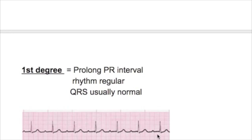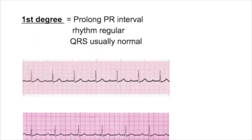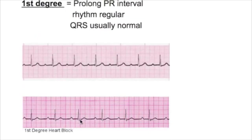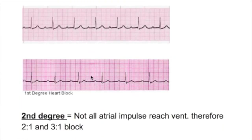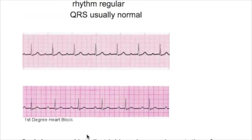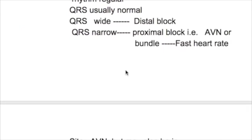The QRS is usually normal in first degree block, and there is no QRS drop. In second degree block, if the QRS is wide, it means it's a distal block; if the QRS is narrow, it's a proximal block — in the AV node or in the bundle.